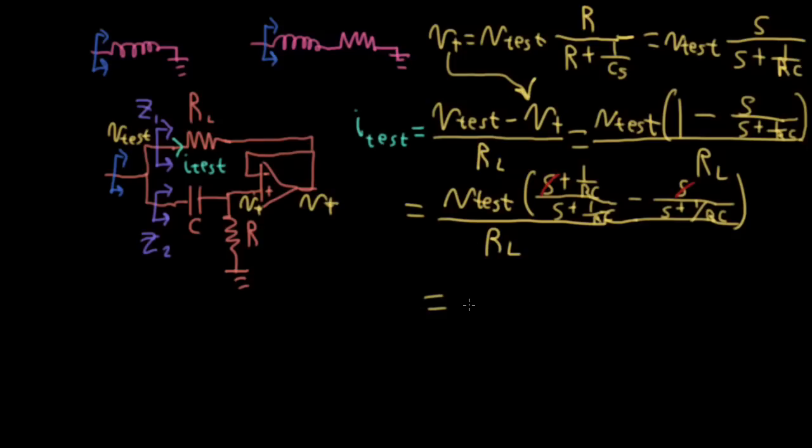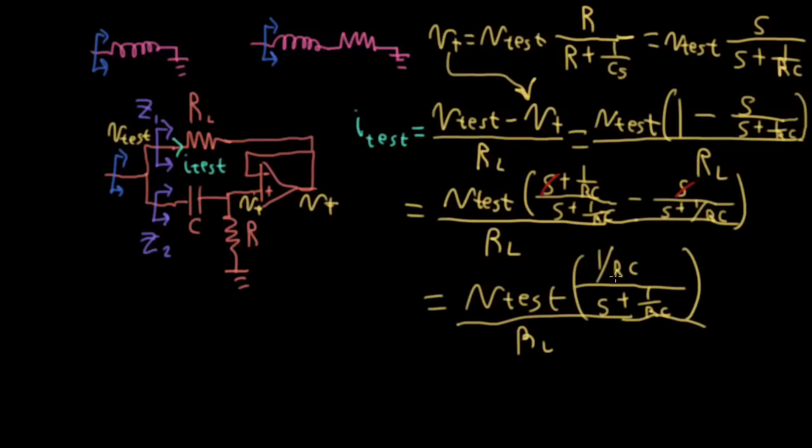So we can say VTEST all over RL. And we have 1 over RC all over S plus 1 over RC. So that now has the form of a canonical low-pass filter. Just because it's convenient later, let me rewrite this as VTEST with, I'll write 1 over RCs plus 1. So we'll put it in this kind of time constant style form.